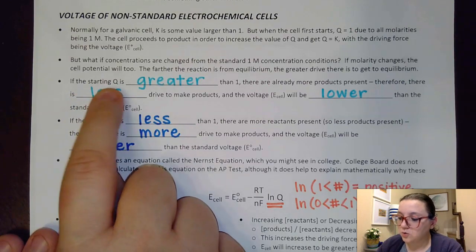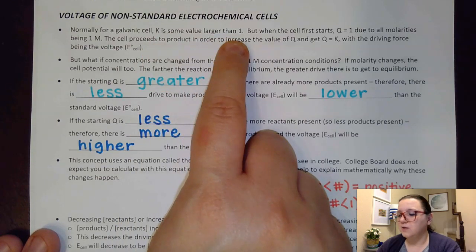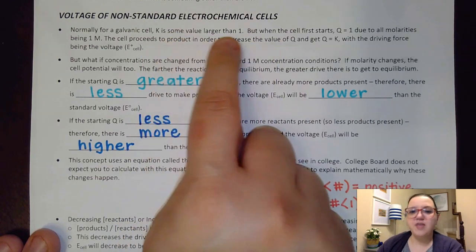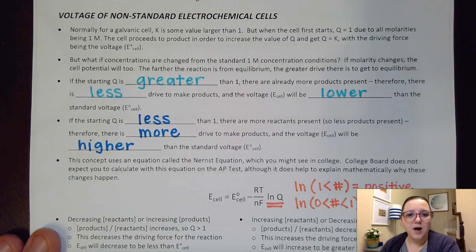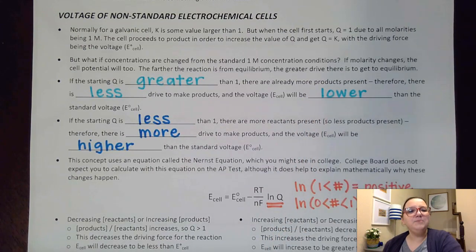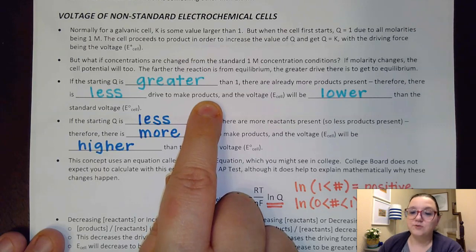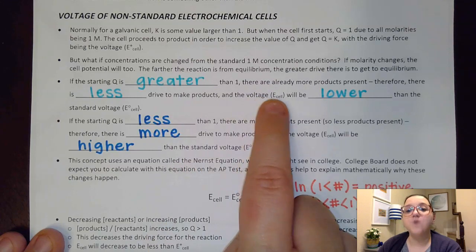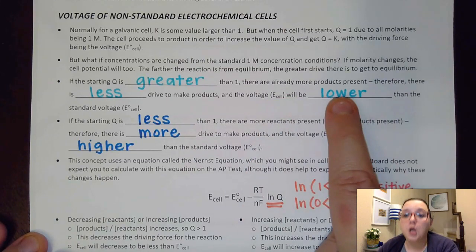If our starting Q is greater than one, we're already closer to the K we're trying to reach. So there's going to be a drive to get to products, but not as large as it would have been otherwise. There's already more products present, so we don't have to shift things as much to reach K. Therefore, we have less drive to move electrons, and our new cell voltage will be lower than the standard voltage.